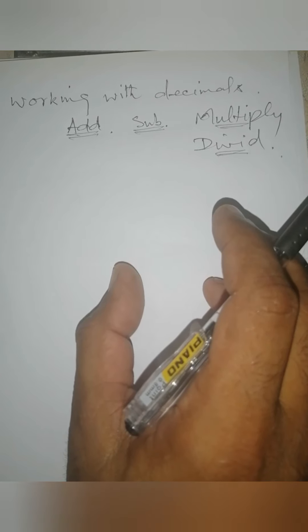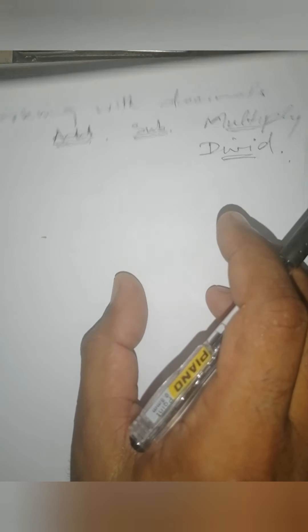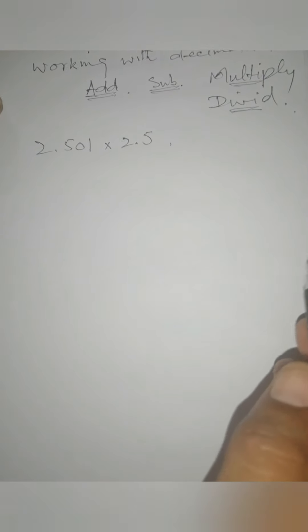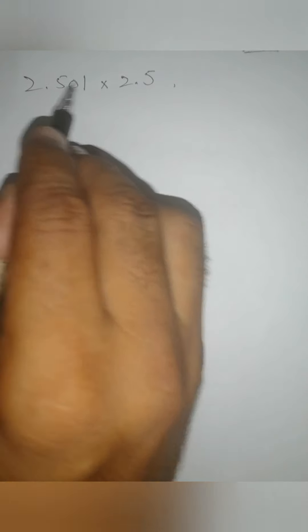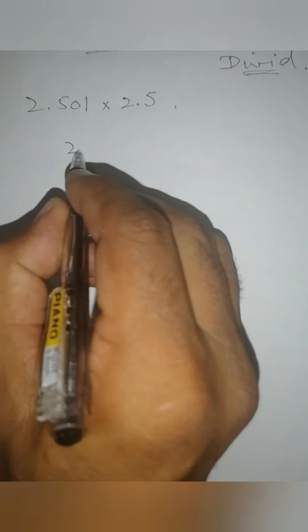For example, this is a number: 2.501 multiplied by 2.5. These are two decimals and how to multiply. In dono ko multiply karna hai, very easy kam hai. From these, remove the decimal. This is 2501 and the other is 25. This is a simple multiplication. You know simple multiplication. Let me do it. Five times 1 is 5.